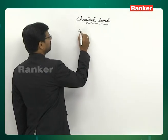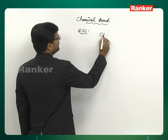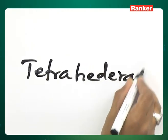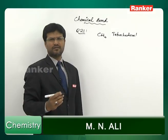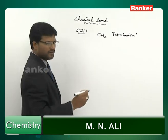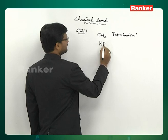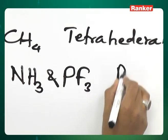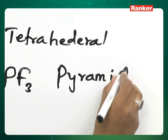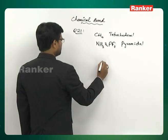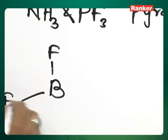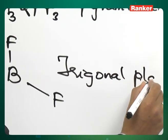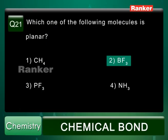Methane is tetrahedral — it has 4 hydrogens surrounding carbon and these 4 hydrogens are on the 4 corners of a tetrahedron. Ammonia and PF3 are pyramidal because of the presence of a lone pair on the central atom. BF3 has trigonal planar shape, so the correct answer is the second option.